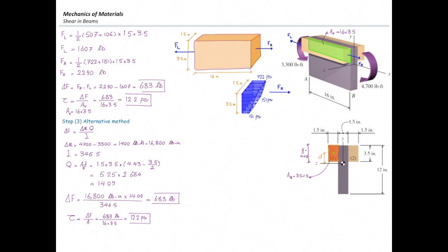We would like to start from that point. I will consider one shape again like that — I changed the dimensions. An important change I will make here is that instead of assuming these two segments, segment one and two, are fully connected to the web element, I use bolts to connect the two pieces together. That is the difference we have here.